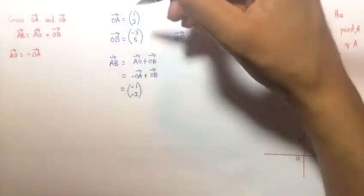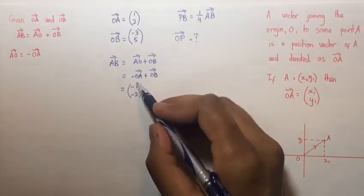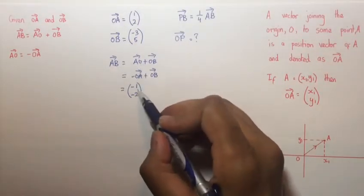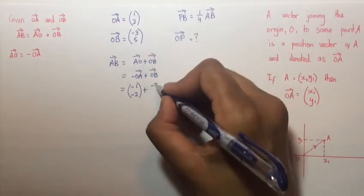When you find a negative of a vector, you simply negate each component. So we are left with vector AO being (-1, -2) plus vector OB which is (-3, 5).